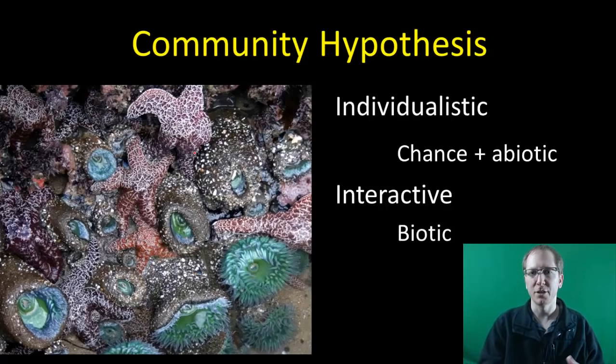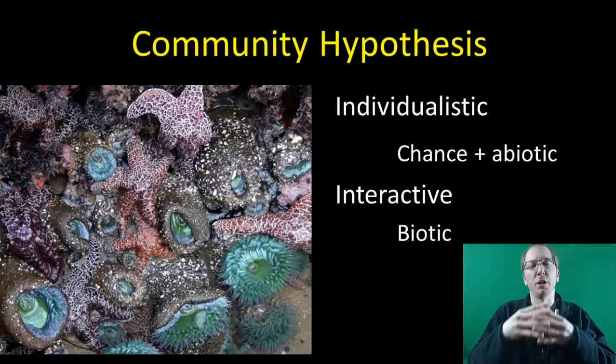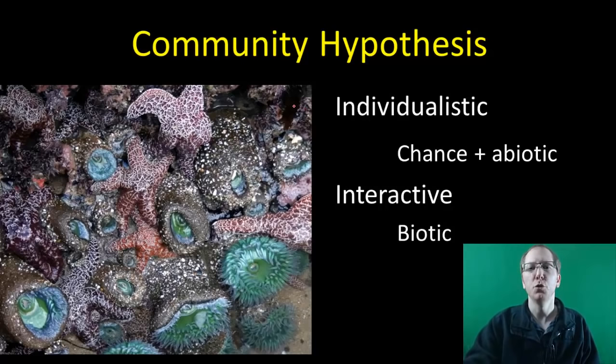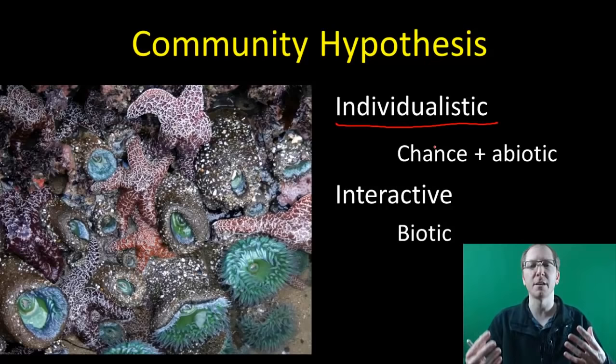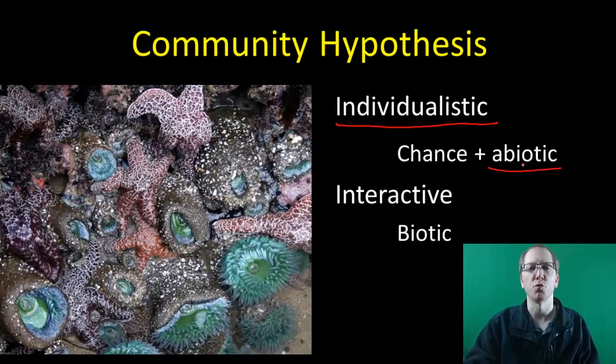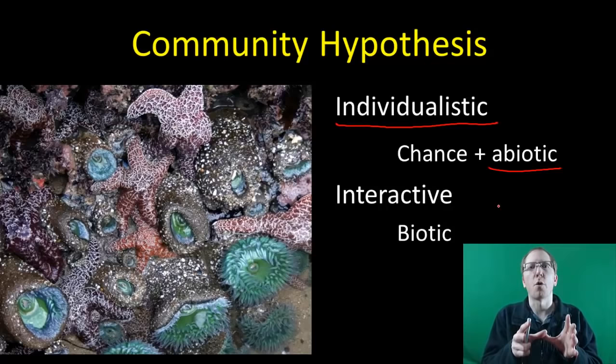The community hypothesis tries to look at why we find the organisms that we do in each community — how communities end up situated with the different species and populations that they have. There are two ways of looking at this. The individualistic approach focuses on the actual individual species and their needs. There's some chance involved, like whether they arrive at the right time with food present, but it also focuses heavily on whether the abiotic conditions are right — the right amount of moisture, the right temperature — to determine whether that organism can live in that environment.